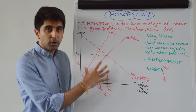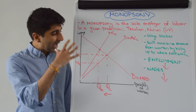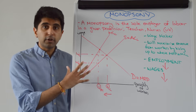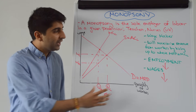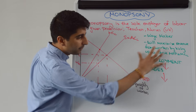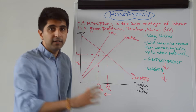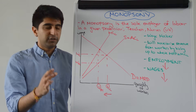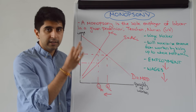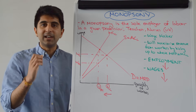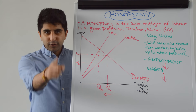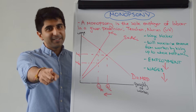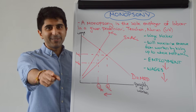That's how monopsony works — actually quite a simple diagram as long as you know how to draw it. The end outcomes are very important: very inefficient and distorting to efficient labour market outcomes. Thank you so much for watching, I'll see you in the next video.